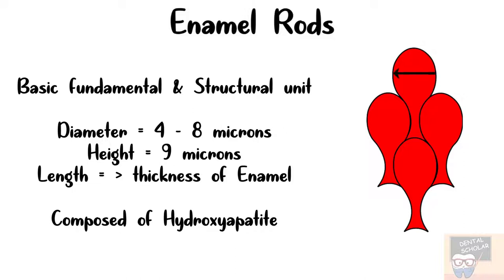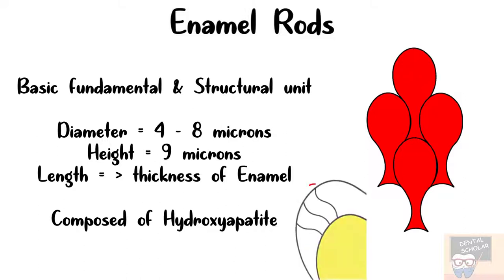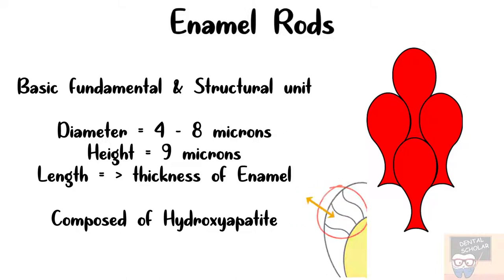The diameter of enamel rod is about 4 to 8 microns, its height is about 9 microns, and its length is variable. The enamel rod extends from the DEJ to the surface, so the length of the enamel rod is greater than the thickness of enamel since its course is wavy from DEJ to the surface. The enamel rods are composed of hydroxyapatite crystals.